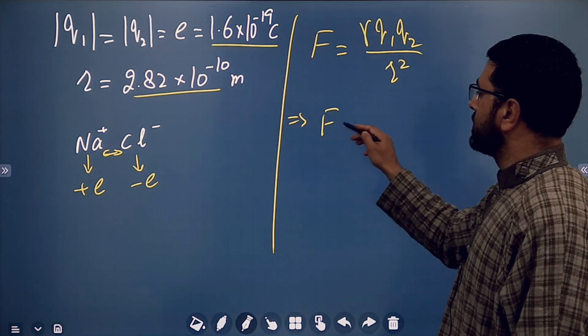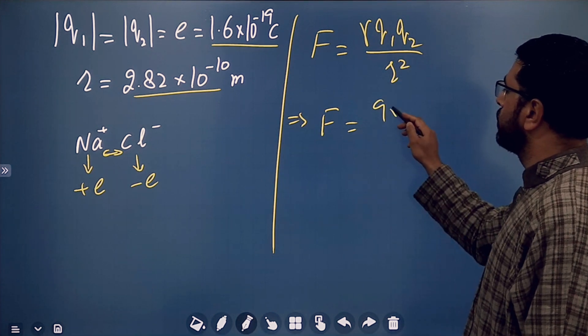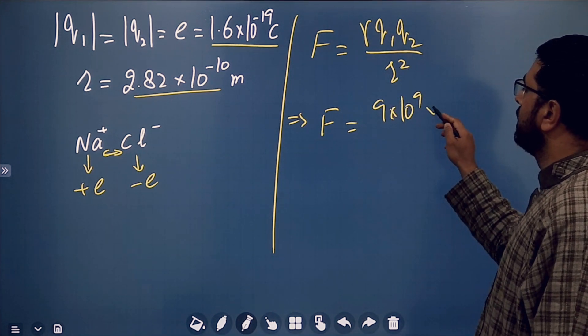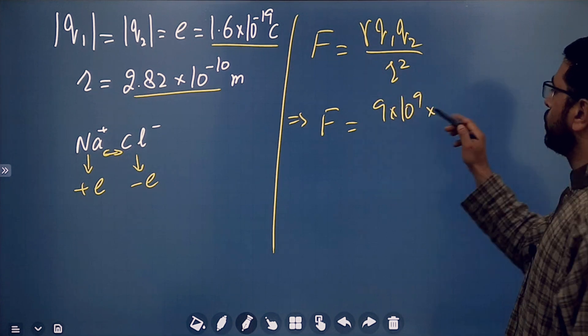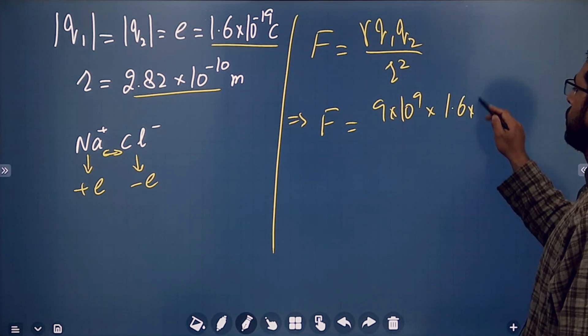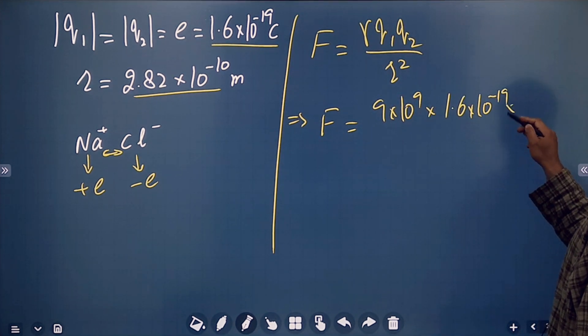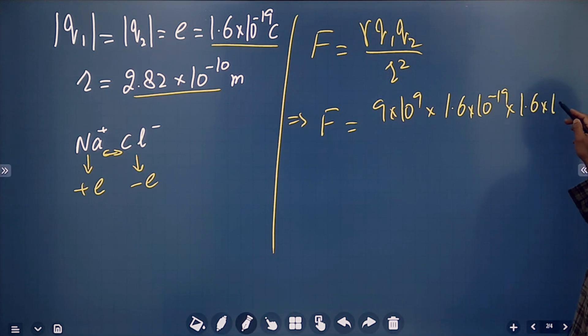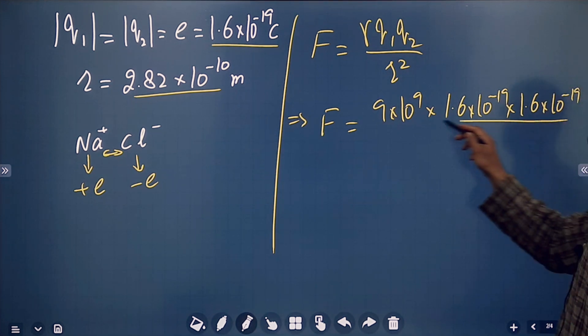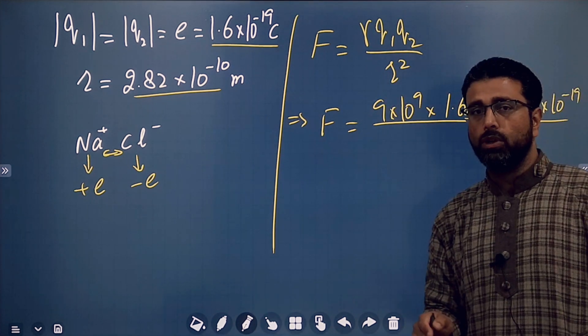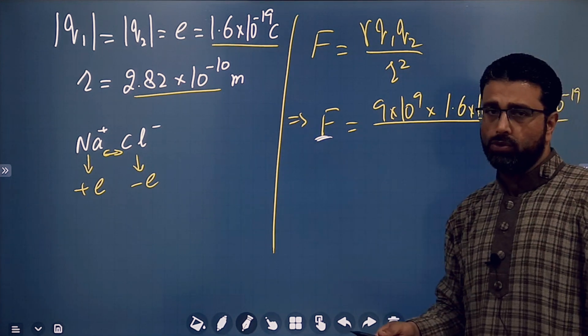So, this implies F equals γ is 9 × 10^9. Q1, Q2, both are 1.6 × 10^-19, and the other one is also 1.6 × 10^-19. We are just substituting magnitudes of Q1 and Q2, because we are only interested in magnitude of the force.